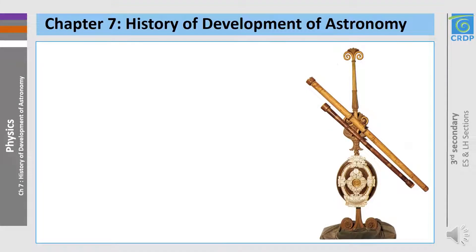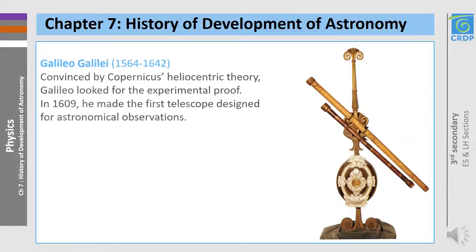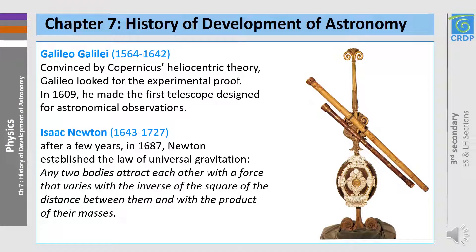Two of the greatest scientists in the history of astronomy are Galileo Galilei and Isaac Newton. And after a few years, in 1687, he established the law of universal gravitation. The law states that two bodies attract each other with a force that is proportional to the product of their masses and inversely proportional to the square of the distance that separates them.